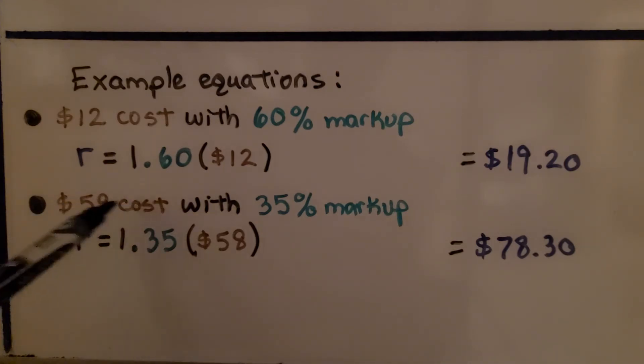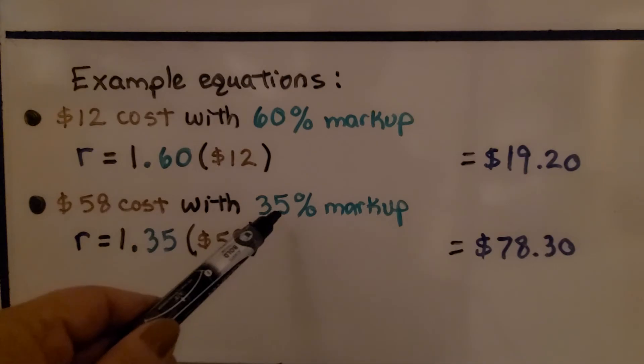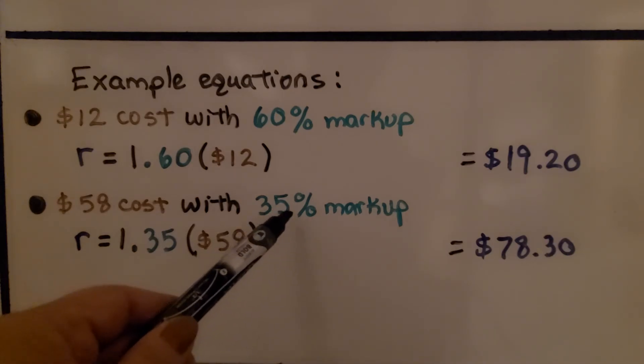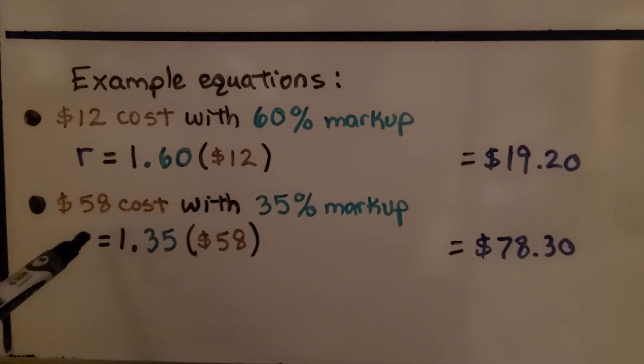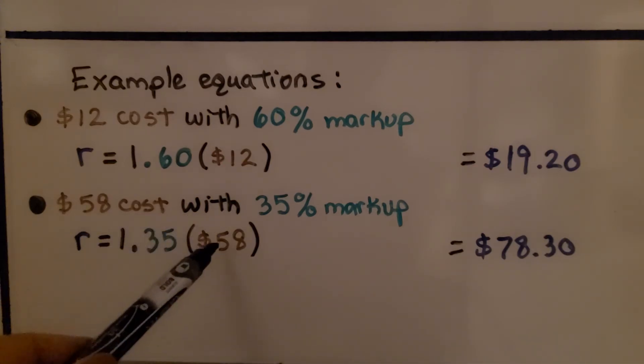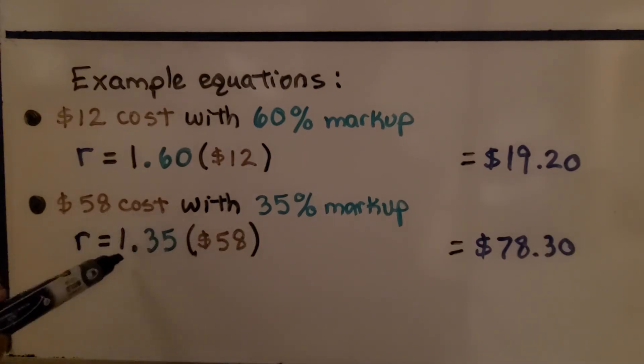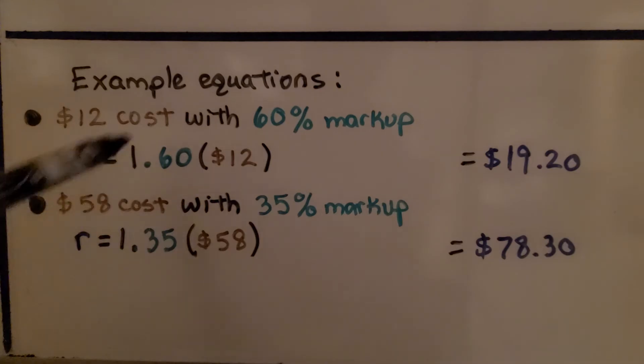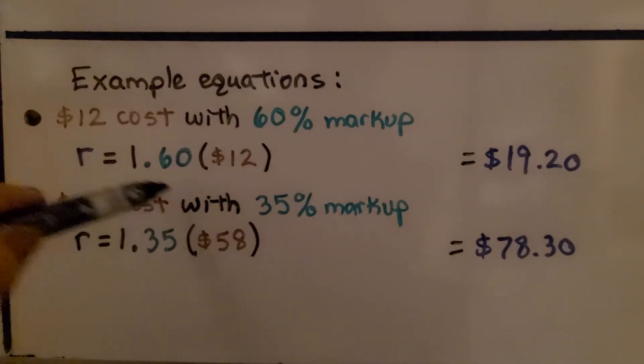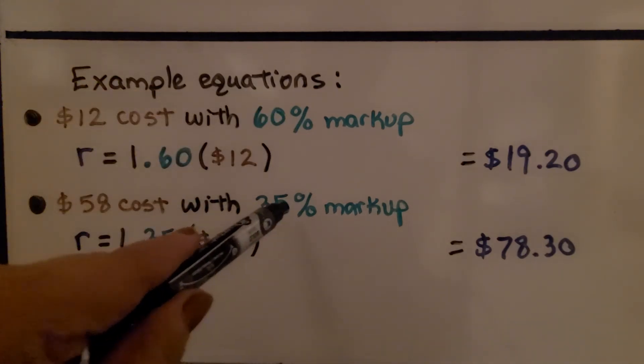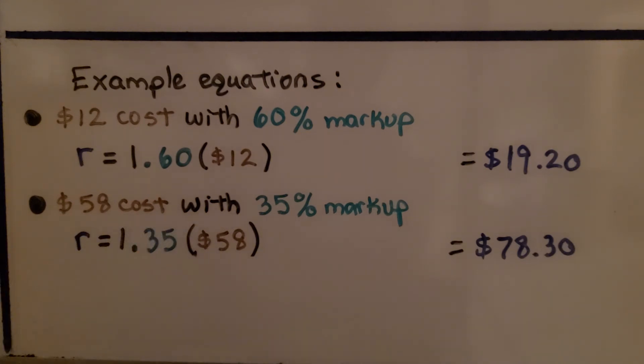Notice how we've got a 1 in front of whatever the markup is. It's a 60% markup, so we've got 1.60. We've got a 35% markup, so we have 1.35. If we have a $58 cost with a 35% markup, the retail price is $78.30.